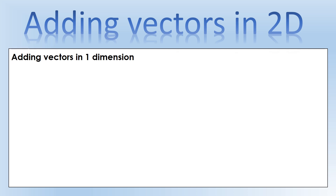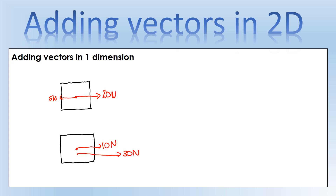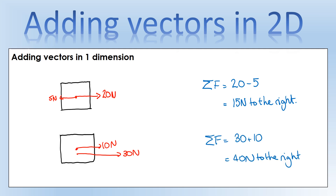In this video we're going to take a look at adding vectors, starting with adding vectors in one dimension which we've looked at before when looking at forces. So as an example, we've got a 20 newton force acting to the right and a 5 newton one acting to the left. To calculate the resultant force we do 20 minus 5 because they're acting in opposite directions, giving a resultant force of 15 newtons to the right. For the bottom example, both forces are in the same direction so we get a resultant force of 40 newtons to the right.